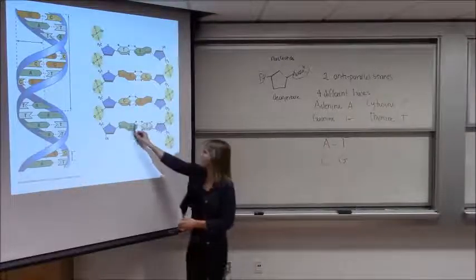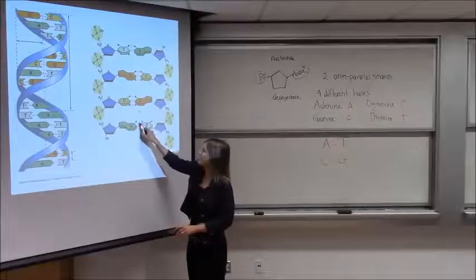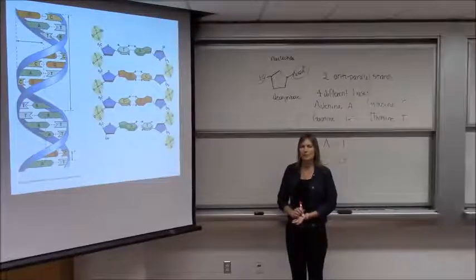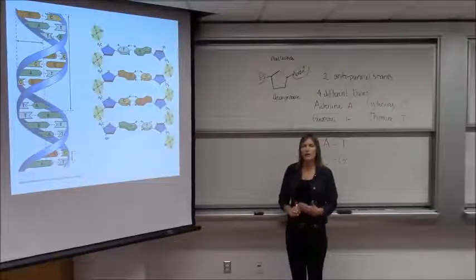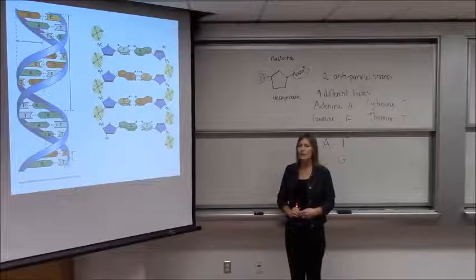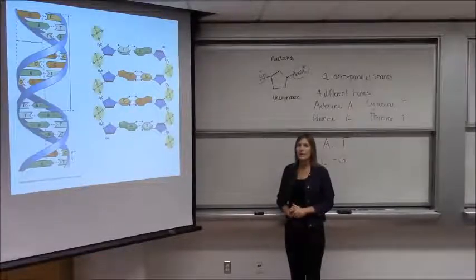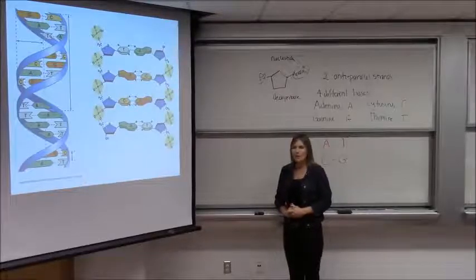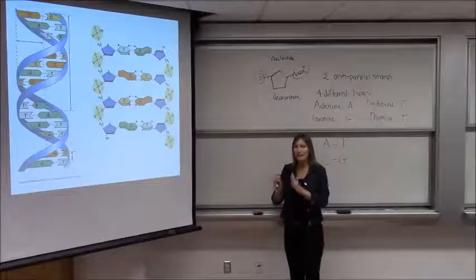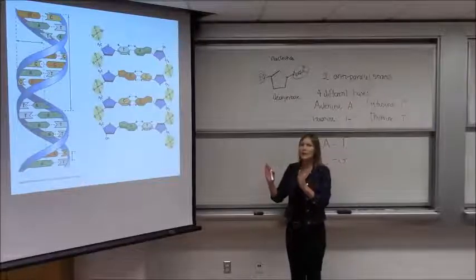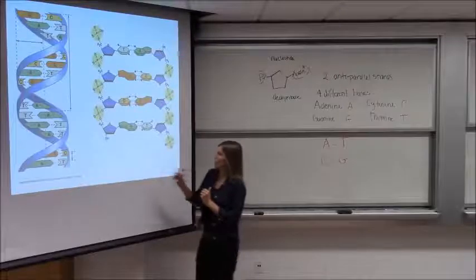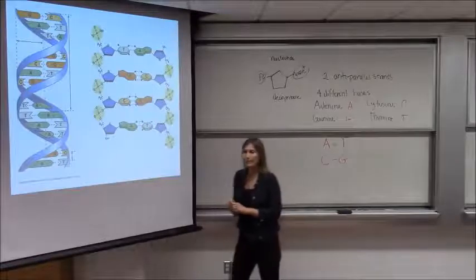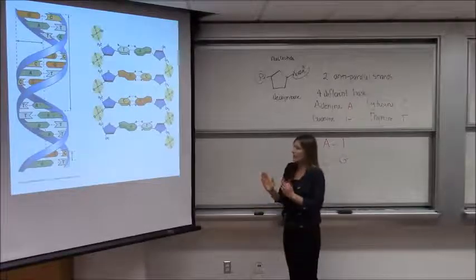The bases are connected on the two anti-parallel strands by hydrogen bonds. What do you remember about hydrogen bonds — are they really strong and hard to break, or relatively weak and easy to break? They're very easy to break. So this is a good setup. We need those bonds to be easy to break because we need to separate those two strands so we can get in there with an enzyme and read that sequence to copy it. We're going to do that by breaking those hydrogen bonds.